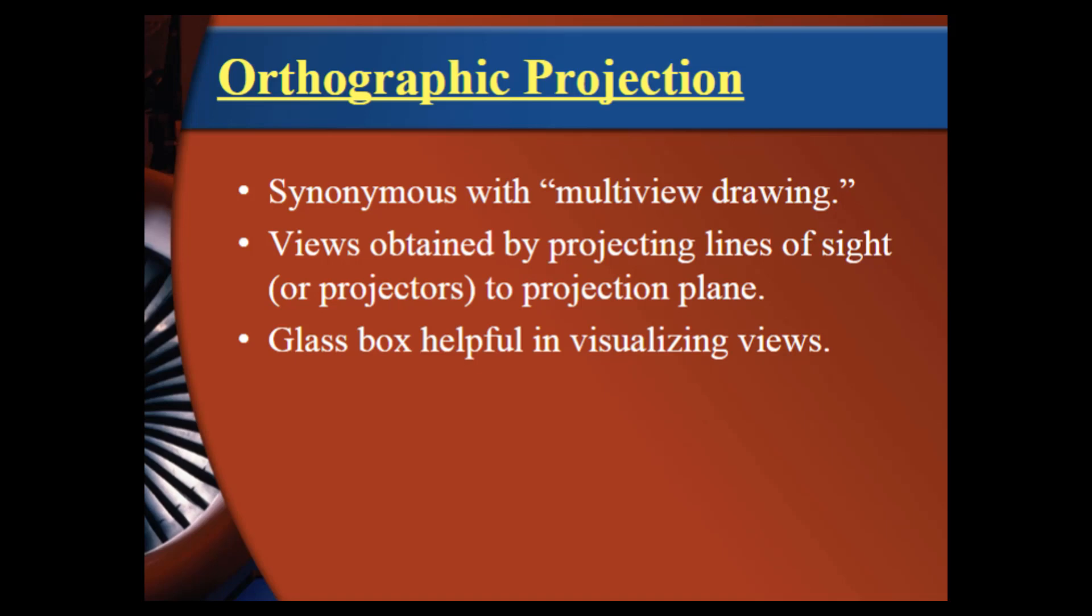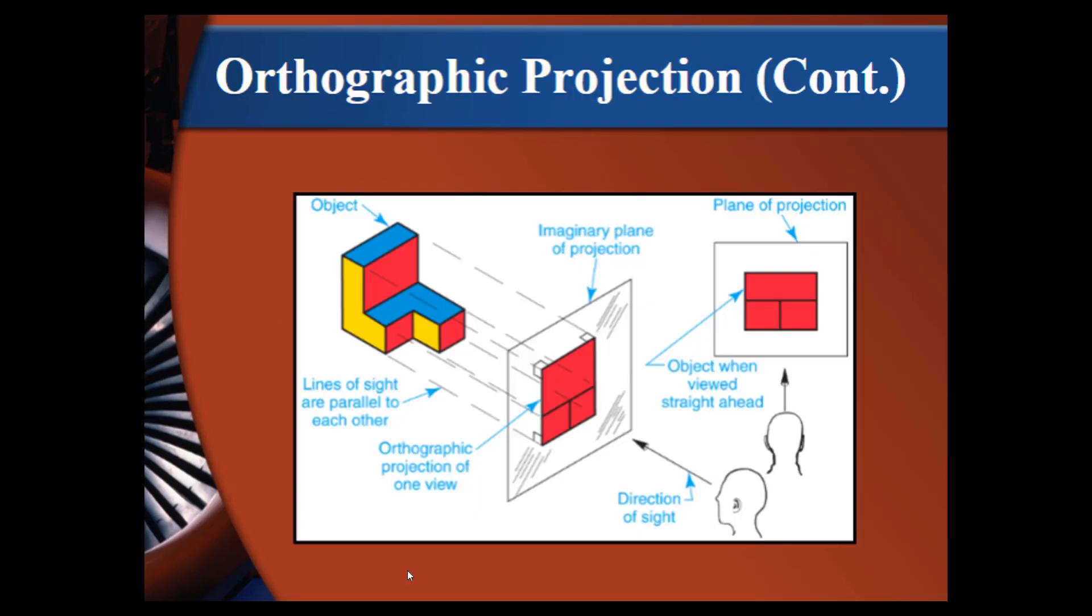We will talk about the glass box, and the glass box helps us to visualize our views. If we look at this same object and we take the red surfaces and we use like a window or a view or an imaginary plane to project that on, we take that three-dimensional view and make it two-dimensional. This is a description of how to pull that information out.